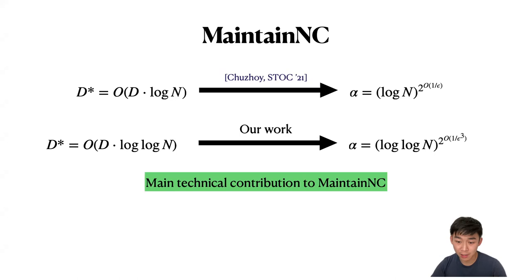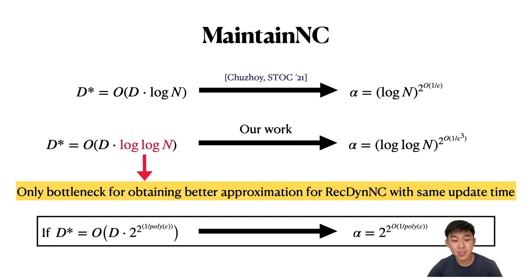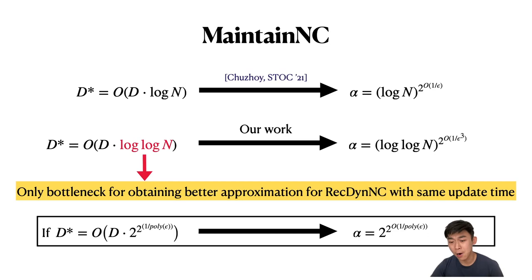This log log n factor is the only bottleneck for obtaining better approximation for Rec-DynNC with the same total update time. If we could set D* = O(d * 2^{2^{1/poly(epsilon)}}), we would immediately get an algorithm achieving approximation factor alpha = 2^{2^{O(1/poly(epsilon))}} with the same total update time.